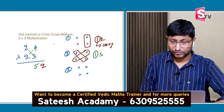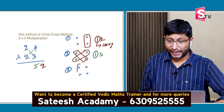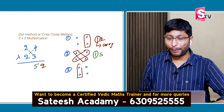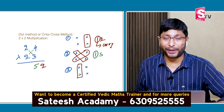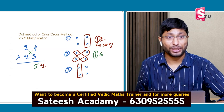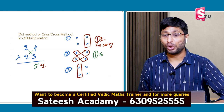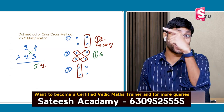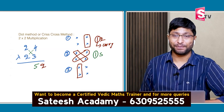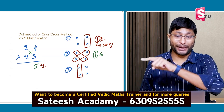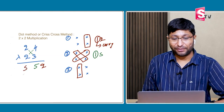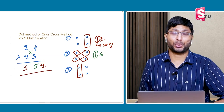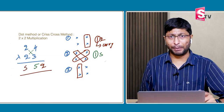Step 3: multiply tens place into tens place — 2 into 2 is 4. Already 1 carry, so 4 plus 1 is 5. The answer is 552. Simple.